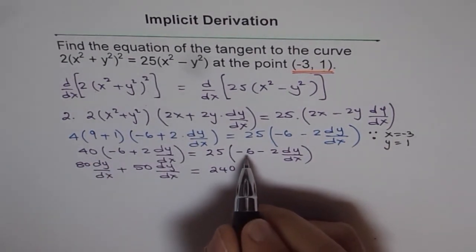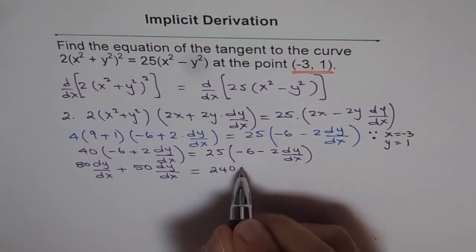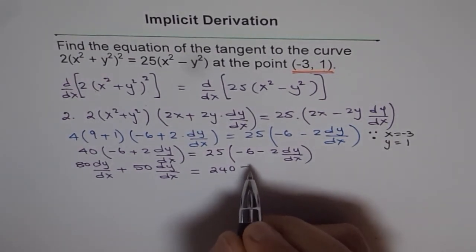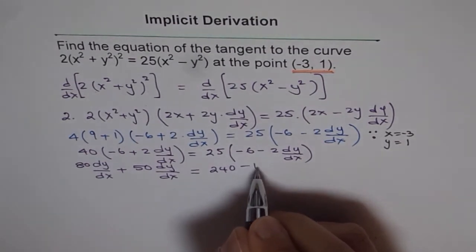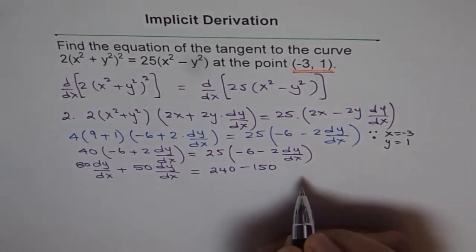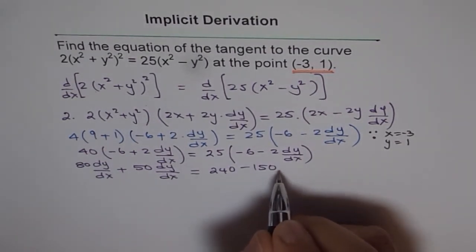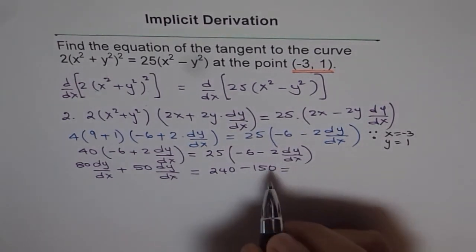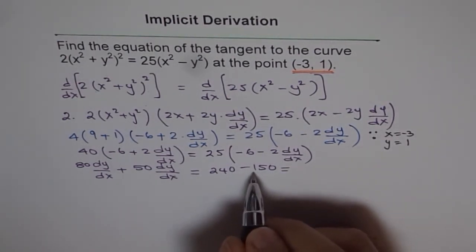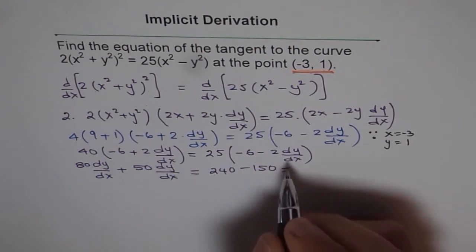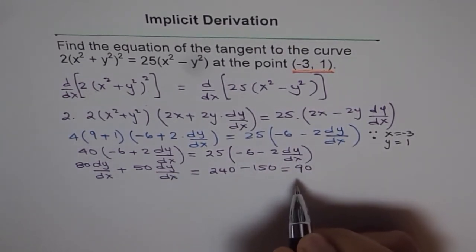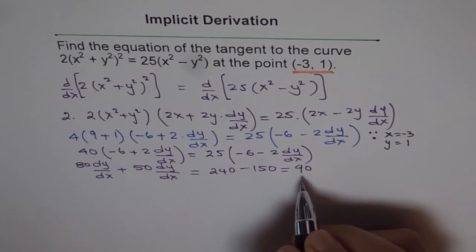Now we're taking these terms on the right side. So 6 times 40 is 240. And since it goes to the right side, the sign changes to positive. And here we have 6 times 25 with a minus sign, so 25 times 6 is 150.